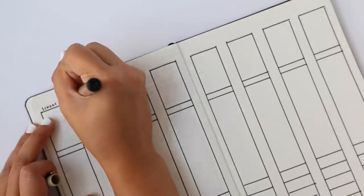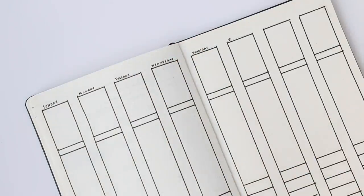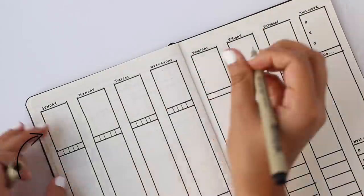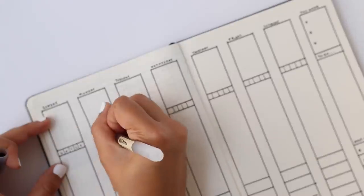This spread and the next weekly spread also both incorporate a menu planner, a sleeping tracker, a study tracker, and also habit trackers. At the top of the column is where you would put down any big events or classes, assignment due dates, tests that you have.